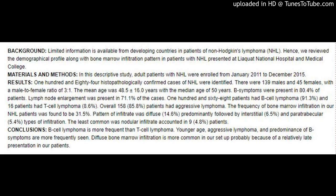Results: 184 histopathologically confirmed cases of NHL were identified. There were 139 males and 45 females, with a male-to-female ratio of 3 to 1. The mean age was 48.5 ±16.0 years with a median age of 50 years. B symptoms were present in 80.4% of patients. Lymph node enlargement was present in 71.1% of cases. 168 patients had B-cell lymphoma (91.3%).